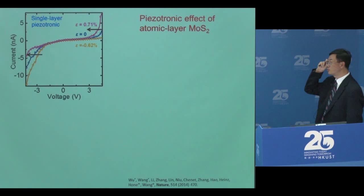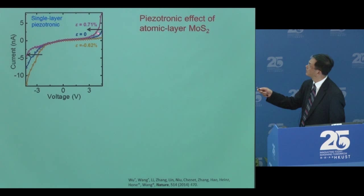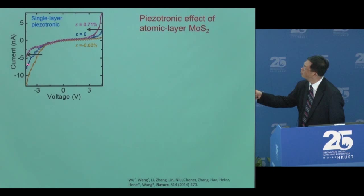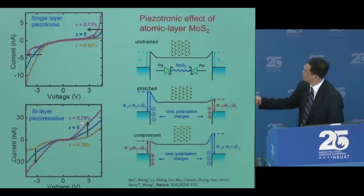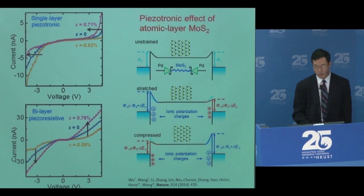We also show that the piezotronic effect is present in single layers. At zero strain, one current level; increasing to 0.71% strain — on positive bias, the current increases; on negative bias, the current drops. This increase and drop on two different bias directions is because of different sign of polar charge at the interface — one lowers the barrier height, one raises it. When you change to double layers, both positive and negative bias show the same current increase with strain — the piezoelectric effect disappears. This proves the piezotronic effect is also present in 2D materials.